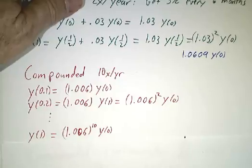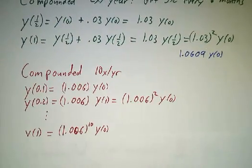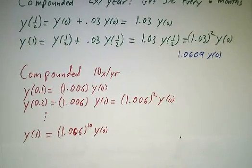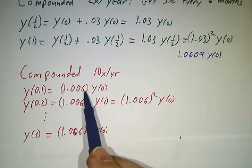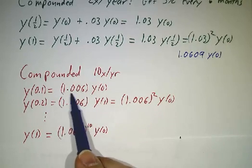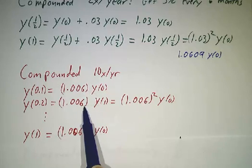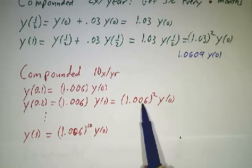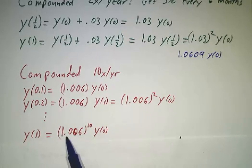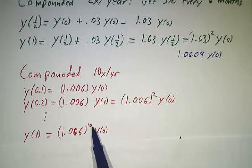If you compound 10 times a year, then every 1.2 months, you get 0.6% interest. So after 1 tenth of a year, you multiply by 1.006. After another tenth of a year, you multiply by 1.006 again. After 10 steps, you've multiplied by 1.006 ten times.